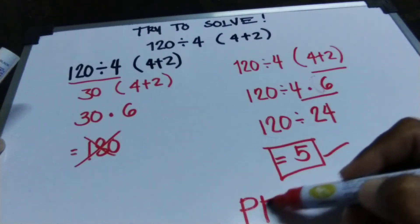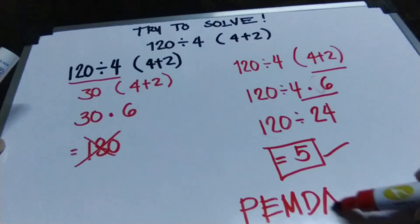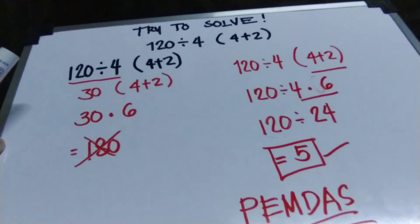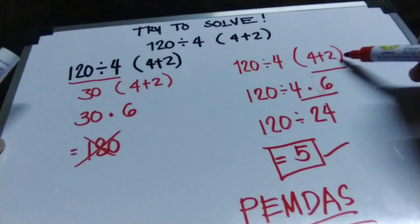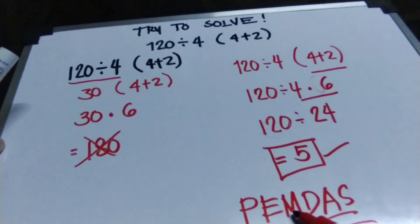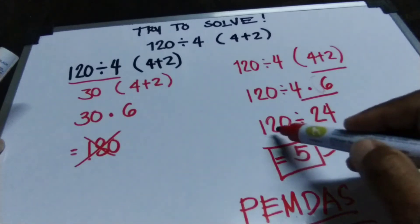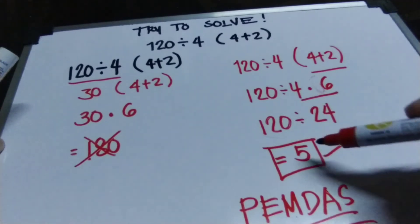You are questioning how 5 is our answer. This is because of what we call the PEMDAS rule — parentheses first, then multiplication, then division. Because of this rule, 5 is the right answer.